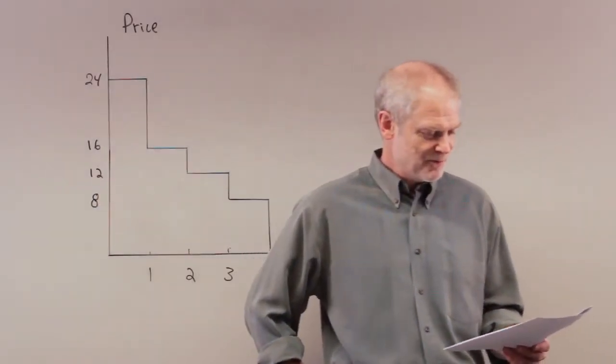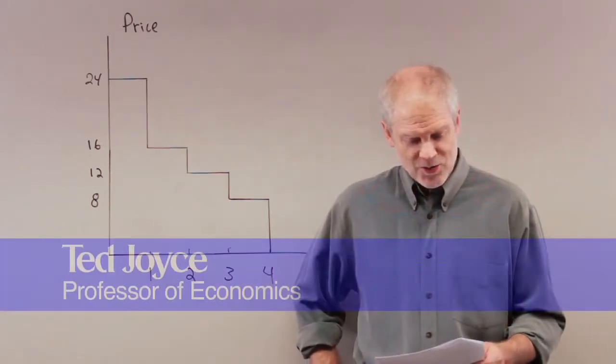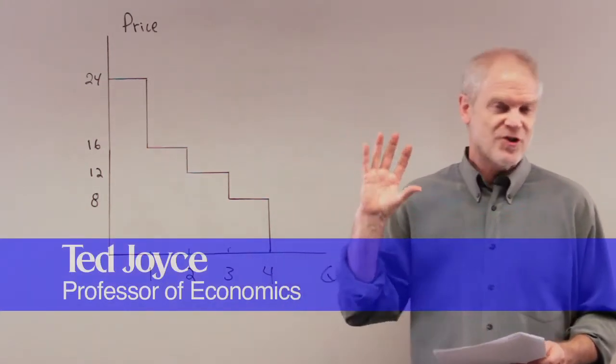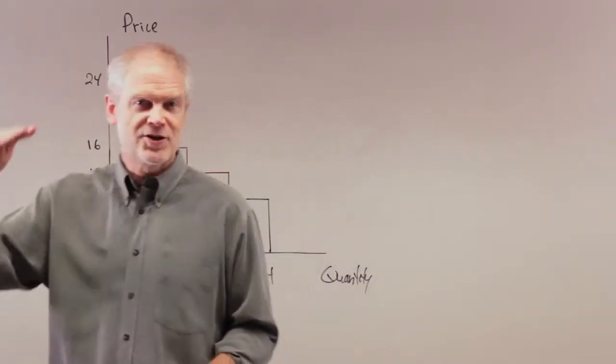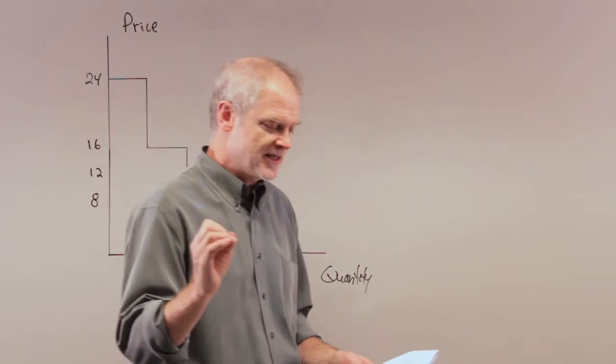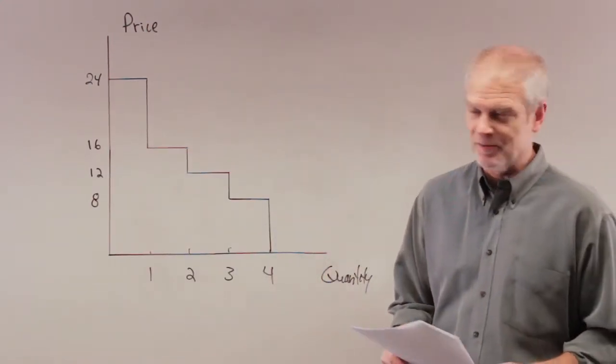Alright, we're back. Chapter 7, Consumer Producer Surplus. We have done the first six problems on consumer surplus, what happens when price changes, what happens to consumer surplus. Now we're going to flip—oh no, I think I've got one more on consumer surplus, then we'll go to producer surplus.